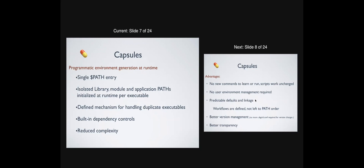Because we have one path entry, if applications have the same executable in them, we have to know which of those duplicates you want to use. We've built a mechanism for handling that into capsules. We've also built in dependency controls — we've become aware of dependencies between applications and added that knowledge into the capsule. We've then taken that knowledge and applied it to our installation model, so when you install a product with a dependency, you get that dependency.